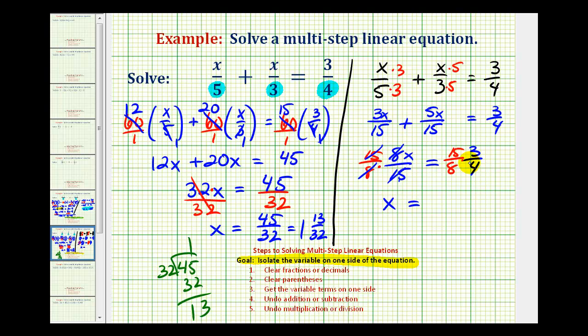And then on the right side, again nothing simplifies, so we'd have forty-five over thirty-two, which is the same solution we had using the first technique, which of course is also equal to one and thirteen thirty-seconds.